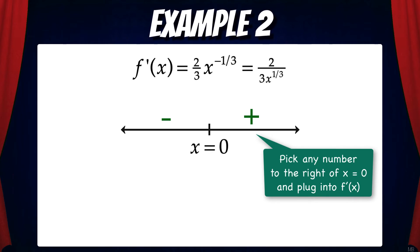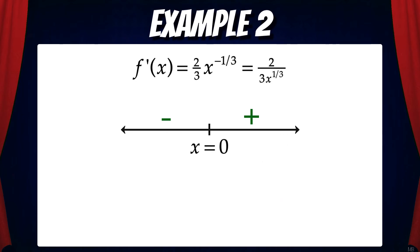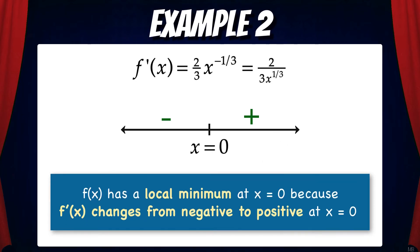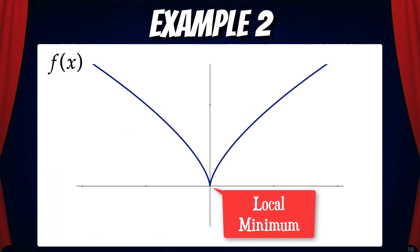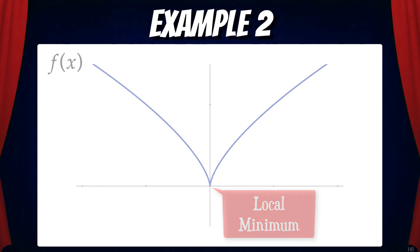So now we can make a conclusion. f has a local minimum at x equals zero because f' changes from negative to positive at x equals zero. Here's a graph of f and we can see that f has a local minimum at x equals zero, just as we confirmed from the first derivative test.